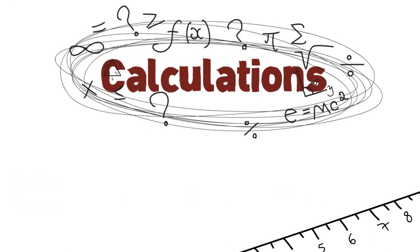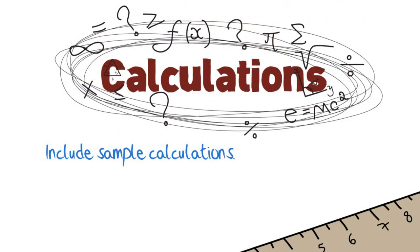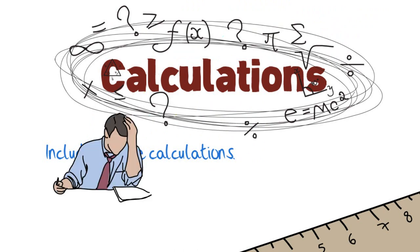Now we have finally reached the calculations section. This should be the simplest section of your lab report. It includes sample calculations, by which I mean put one sample of each calculation you did. If you did 10 additions, please only put one addition process. Do not put all 10—it's going to be tedious and painful for the grader.